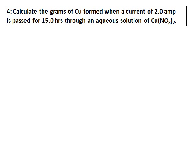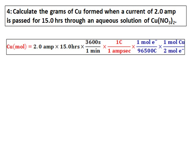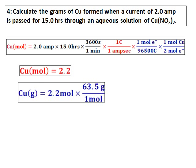Calculate the grams of copper formed when a current of 2 amperes is passed for 15 hours through an aqueous solution of copper nitrate. First calculate the ampere-seconds, then convert to coulombs, then calculate moles of electrons. Since 2 electrons are transferred per copper ion, use 2 moles of electrons per mole of copper. The moles of copper comes to 2.2, and multiplying by the molar mass gives 139.7 grams of copper.